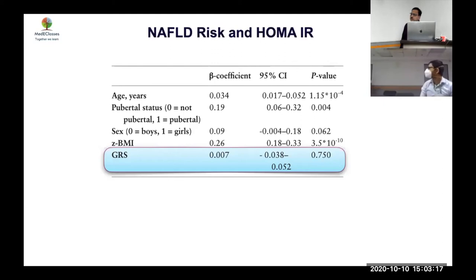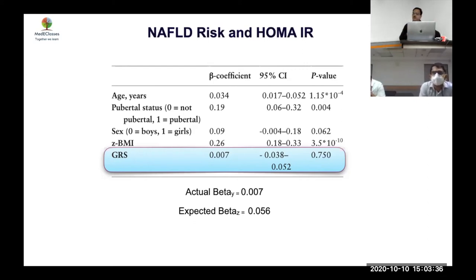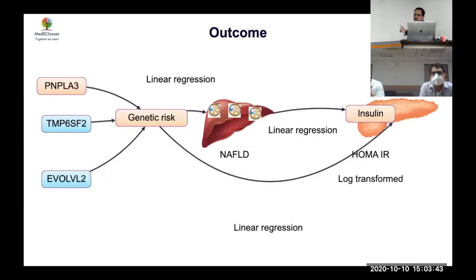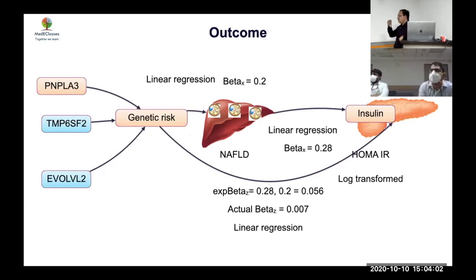The clinical implication is major: there are confounding factors causing both NAFLD and insulin resistance, but they are not causally connected to each other. If you treat fatty liver, your diabetes is not going to be corrected. Although NAFLD and insulin resistance are associated, this is not a causal relationship. The actual beta was 0.007, the expected was 0.056 — only about 10% explanation, which is essentially negligible.